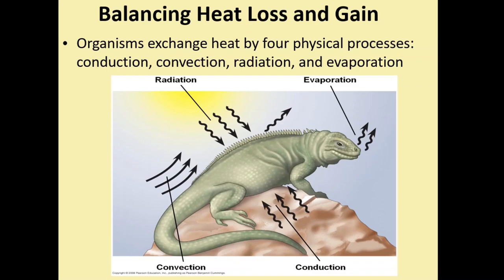Organisms exchange heat by four physical processes: conduction, convection, radiation, and evaporation. These are all nicely demonstrated on a diagram showing a reptile in its environment. Let's go through each one and talk about how it works.